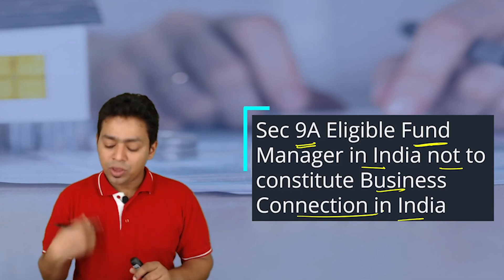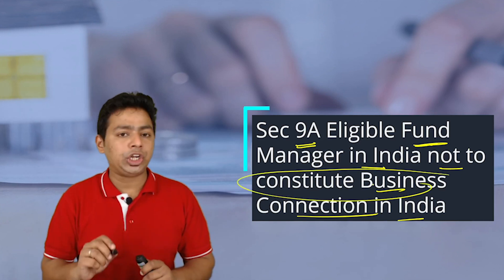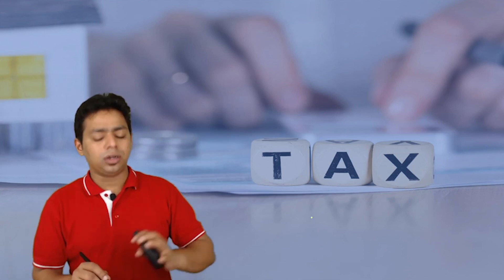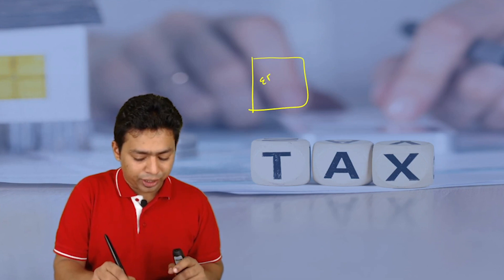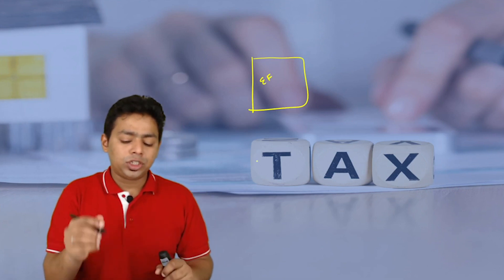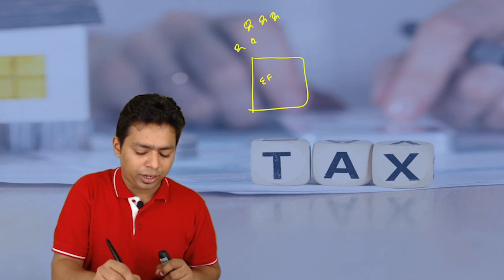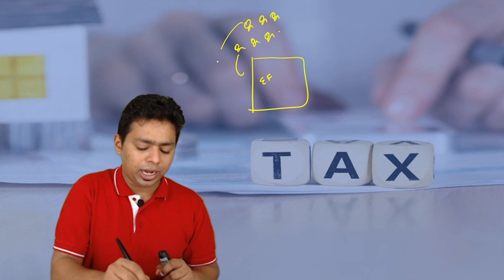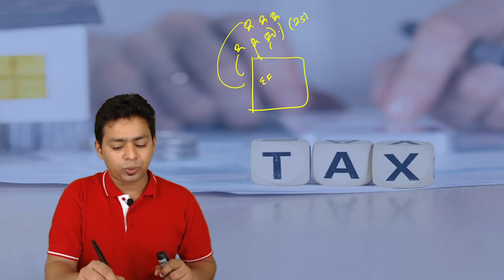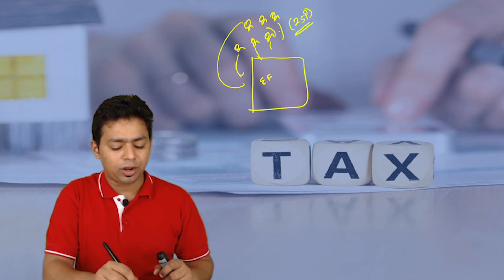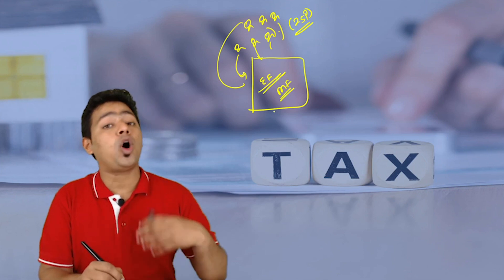We are not giving exemption from income. We are just saying that if you are having a fund manager in India, it will not constitute a business connection. The eligible fund is a mutual fund where various foreign companies, non-residents, and foreign investors have collected money and formed this fund. This is a foreign mutual fund — an offshore mutual fund — and it wants to invest money in India.